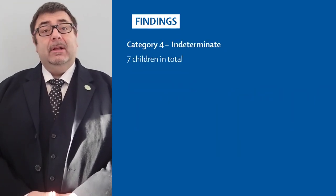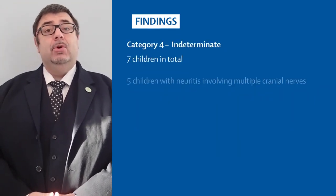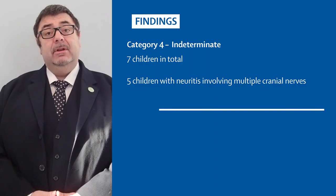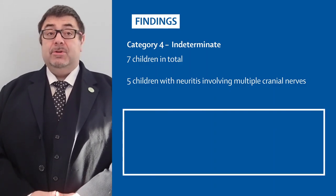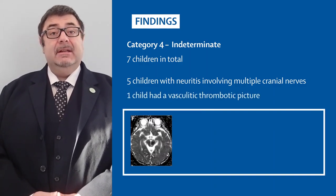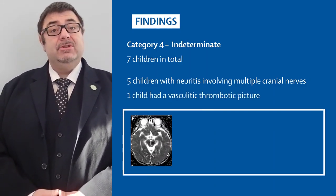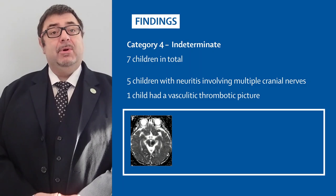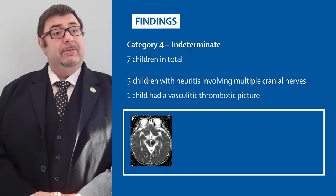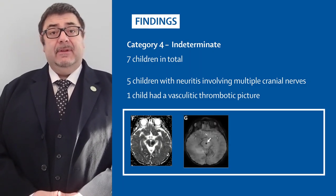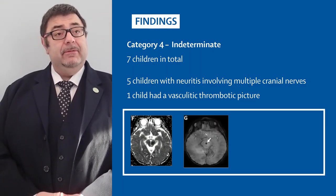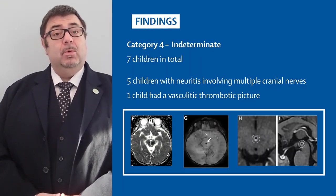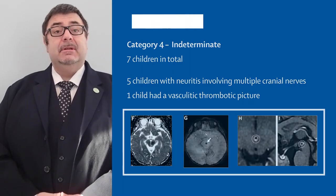Category 4 included cases of neuritis involving multiple cranial nerves. One child had a vasculitic thrombotic picture with acute infarction of their left midbrain, with thrombus in a feeding anterior perforator artery and vessel wall enhancement.